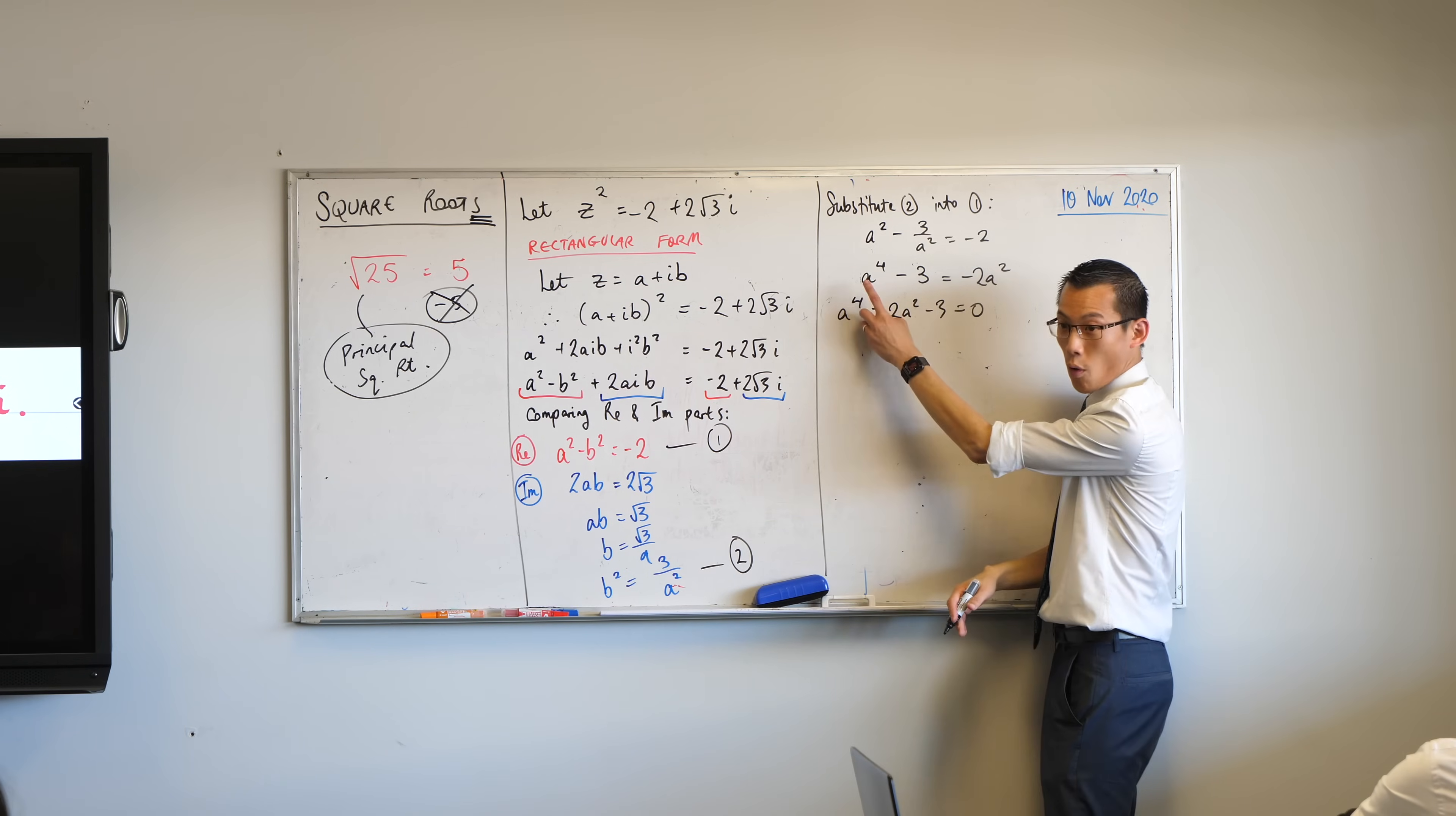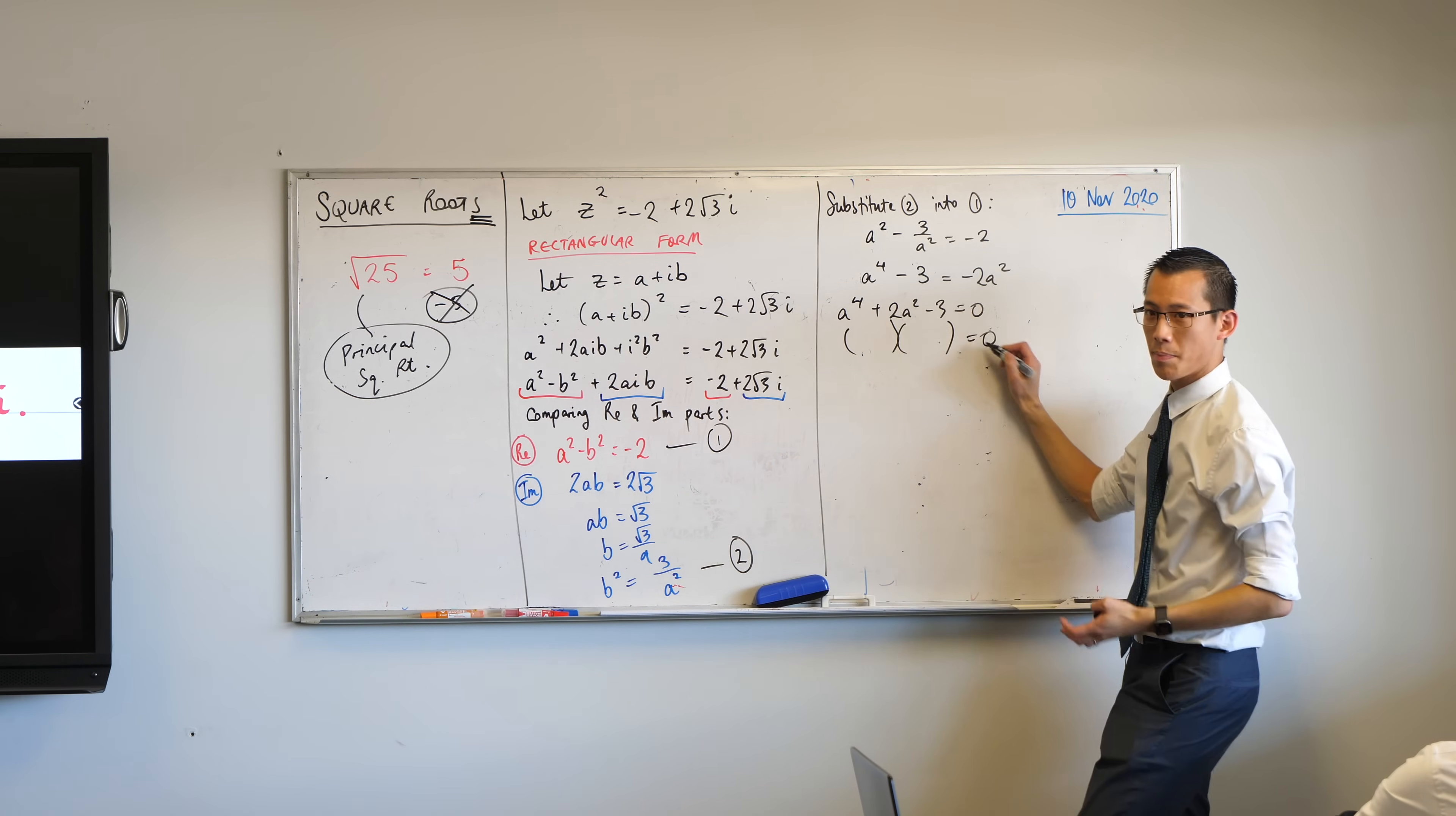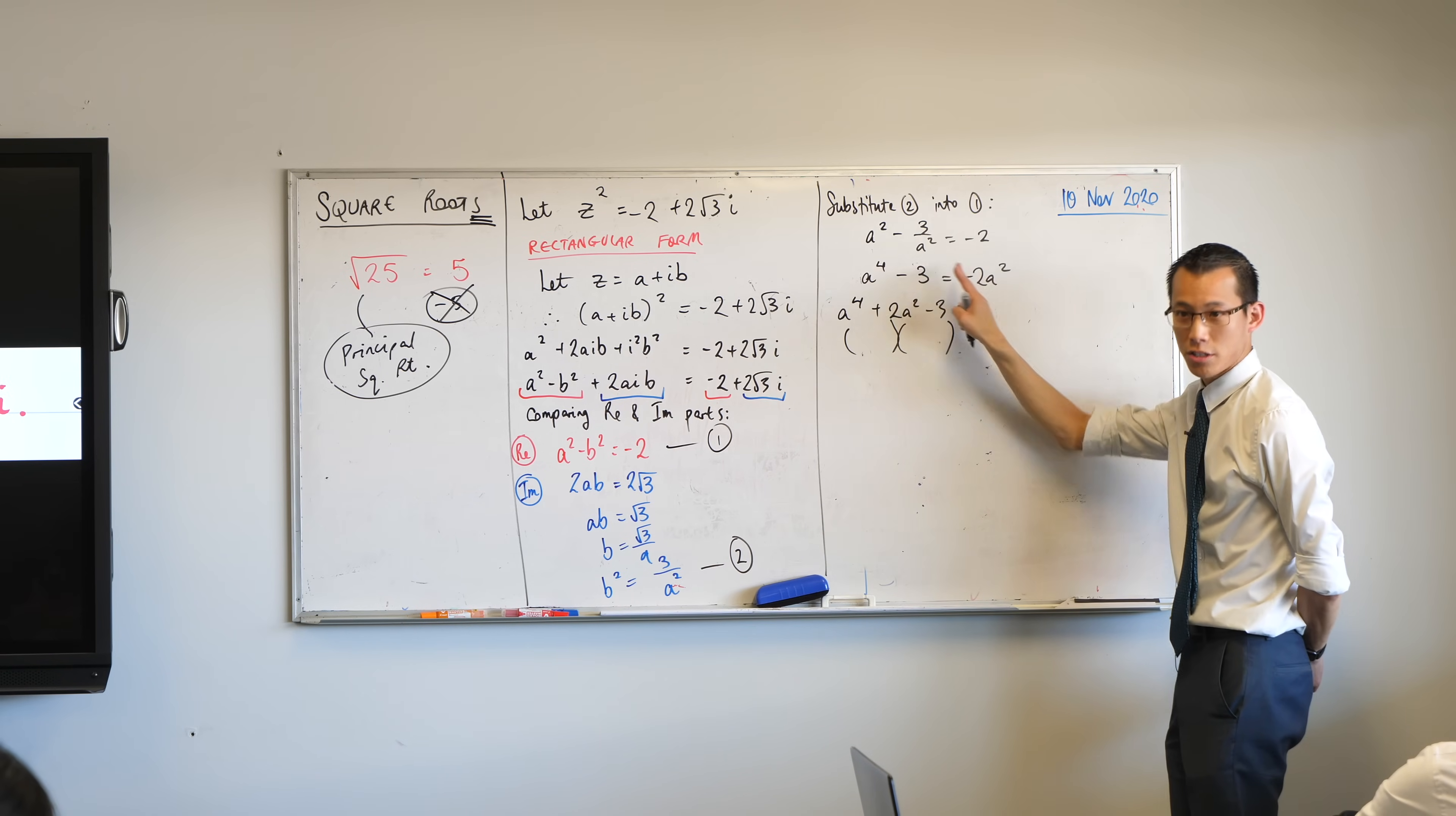If, for example, instead of being a to the four, if you had u squared, and if you had instead of a squared, just u, this is just a quadratic. In fact, you can tell me what the factorization is. What's the pair of numbers you're after? Plus three minus one. They will add to two. They'll multiply to negative three.